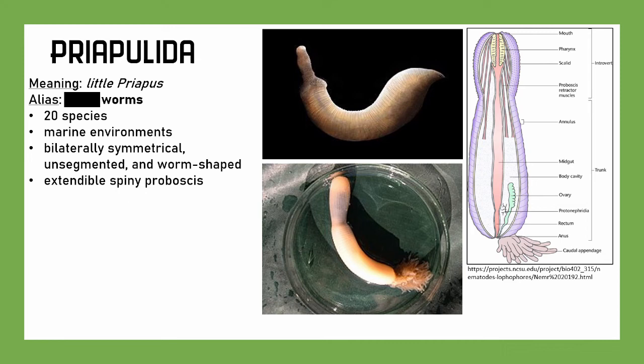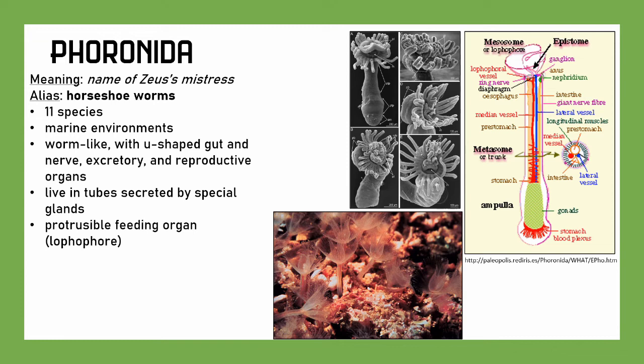We have Phoronida, whose name is the name of Zeus's mistress — so talk about a string of awkward names. They're also known as horseshoe worms. About 11 species in marine environments. They're worm-like, with U-shaped guts and nerve, excretory, and reproductive organs. These are lophophorates — like our Bryozoa and Brachiopoda. They're mostly sessile, living in tubes secreted by special glands. You can see their protrusible feeding lophophores up close.